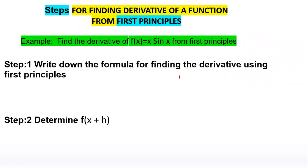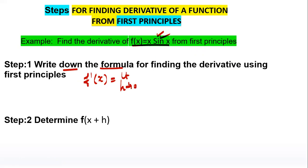Taking the example f(x) = x·sin(x), we have to find out its derivative using first principle. Let's do it step by step. First of all, we write down the formula: f'(x) = lim(h→0) [f(x+h) - f(x)] / h.